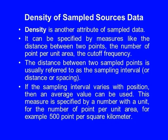Let us look at the density of sample source points. Density is another attribute of sample data. It can be specified by measures like the distance between two points, the number of points per unit area, and the cutoff frequency. The distance between two sample points is usually referred to as the sampling interval, distance, or spacing. If the sampling interval varies with position, an average value can be used. The number of points per unit area is specified with a unit — for example, 500 points per square kilometer.